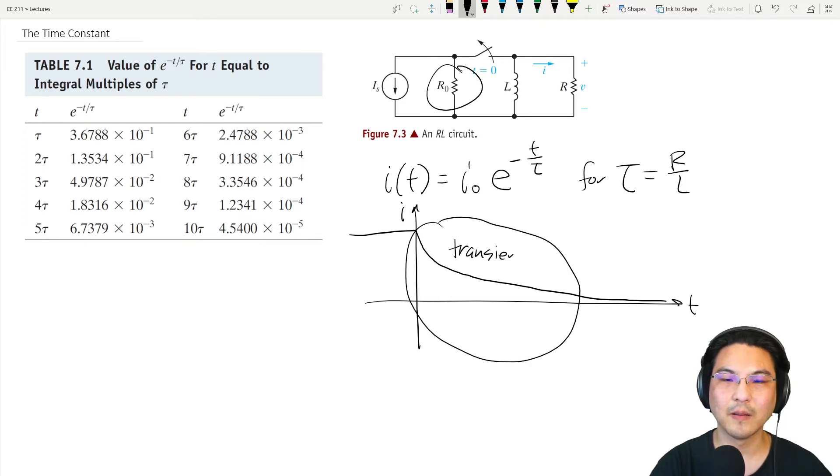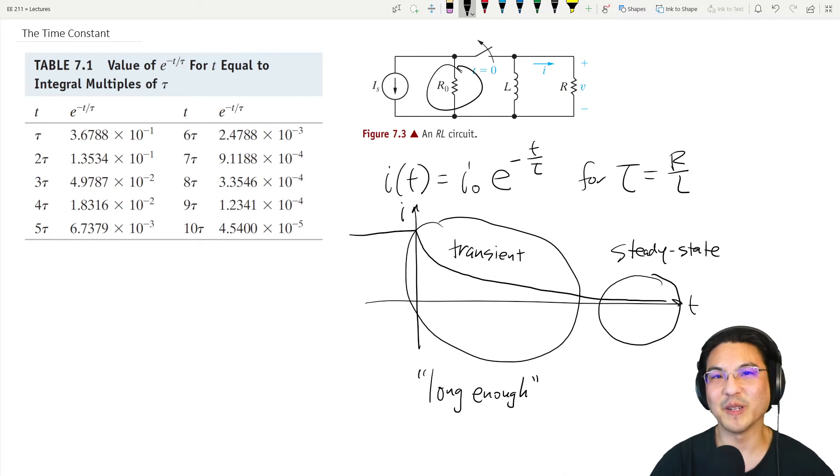If we wait long enough, we have some kind of steady-state response. The question is, how long do we have to wait for it to be steady-state where it's constant? We just wait long enough—it's a little subjective. So we can agree as engineers, how about if the output here, the current, is less than one percent of the original value?